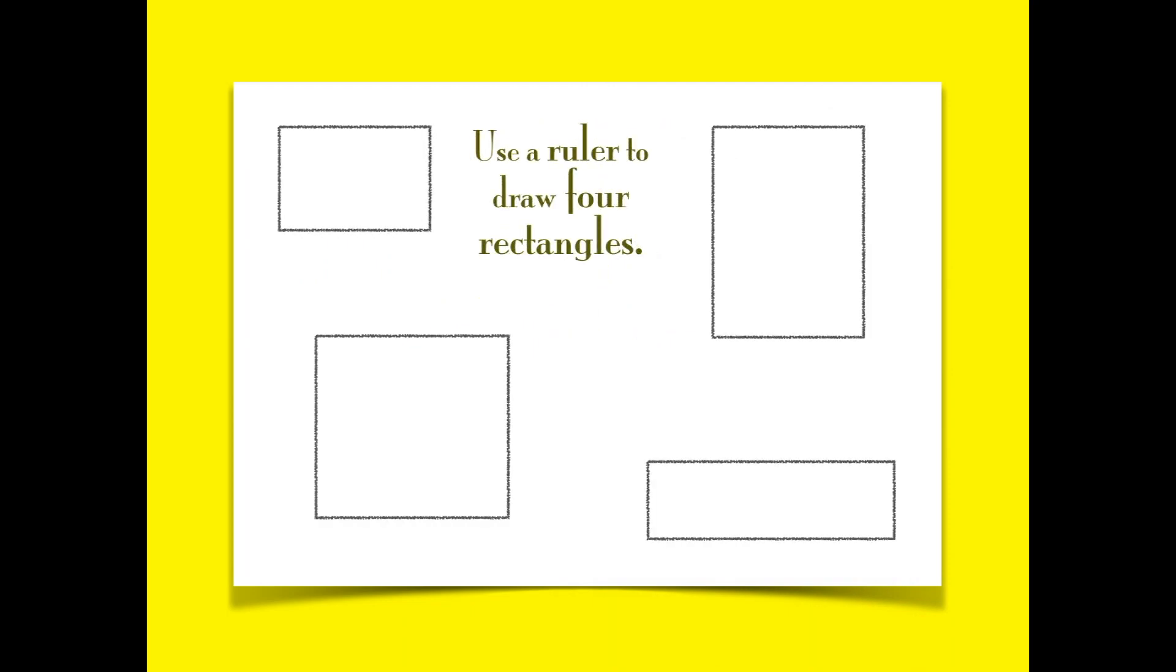Start by using a ruler to draw four rectangles. Then, turn them into boxes that look 3D.